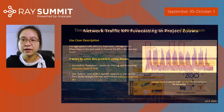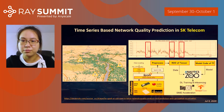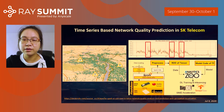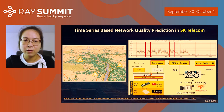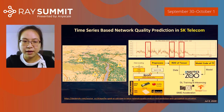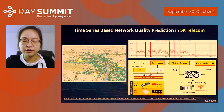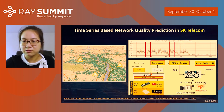Now let's take a look at another user case. This is a project we previously collaborated on with SK Telecom, where we built a time series-based network quality prediction pipeline. SK Telecom wanted to use KPI forecasting to identify potential anomalies in their cells and base stations, and use the results to generate alerts in their three-dimension map. Our forecast model in Analytics Zoo proved to outperform traditional methods. You can check the link provided for more details.